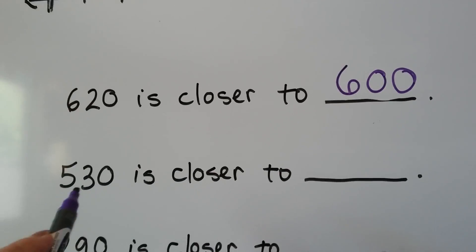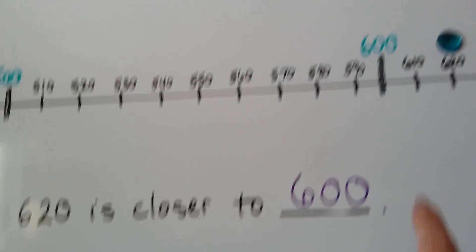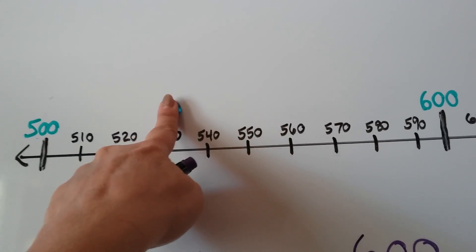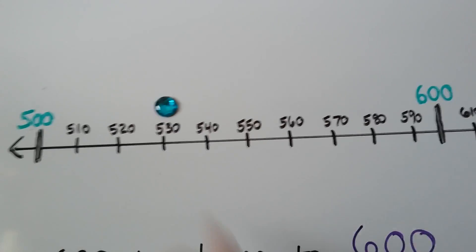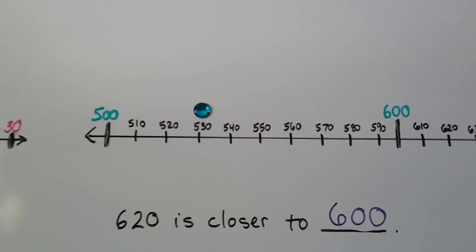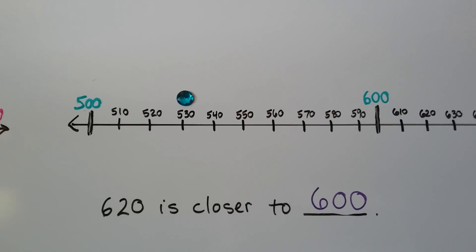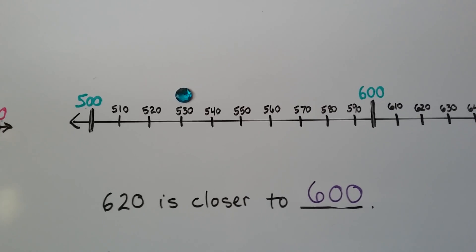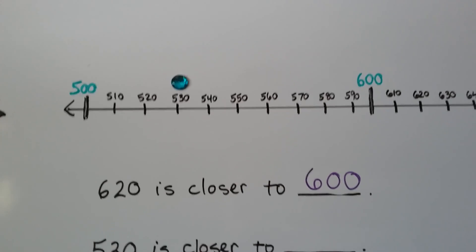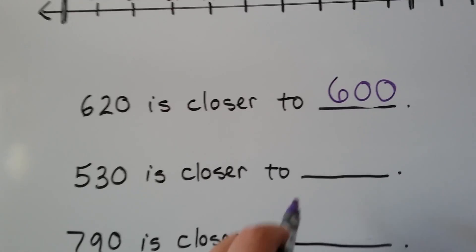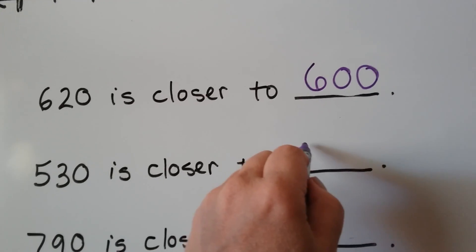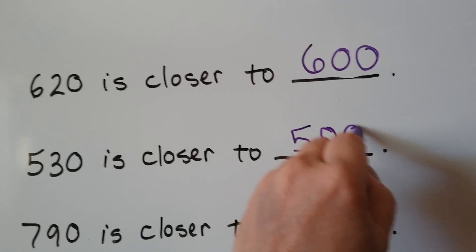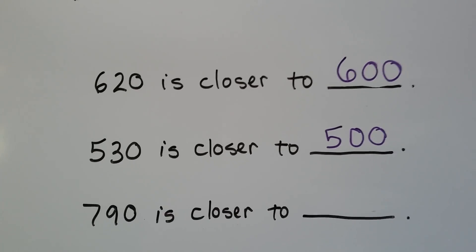Let's try 530. We find the 530 on the number line. We see it's in between 500 and 600, but which one is it closer to? Definitely closer to the 500. So 530 rounds to 500 when we round it to the nearest 100.